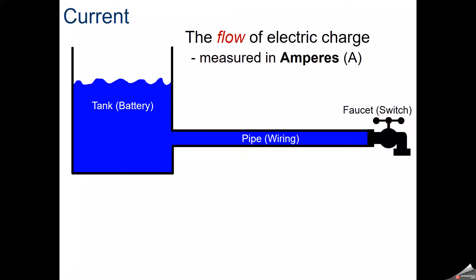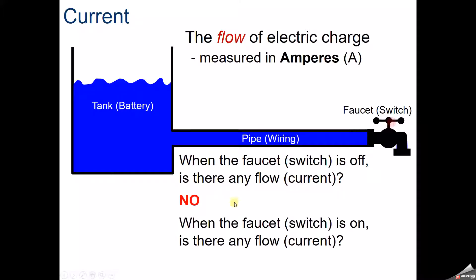Current is the flow of electric charge, measured in amps. Right now the faucet or switch is off. So is there any current? No, the water is not running. But when we turn that switch on, there is current because now the water is flowing through that pipe.